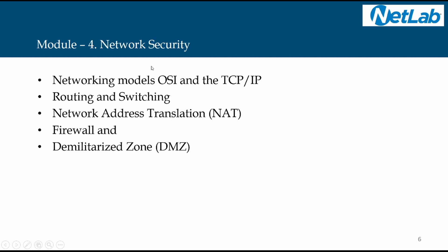In Module 4, network security: the networking models, OSI versus TCP/IP, routing and switching, network address translation — we understand the private IP, public IP, and how translation happens. Firewall for perimeter security and demilitarized zone, DMZ.